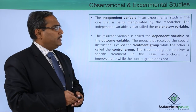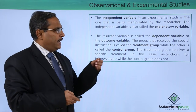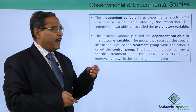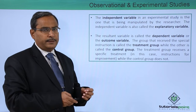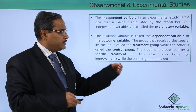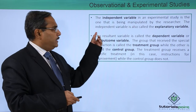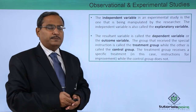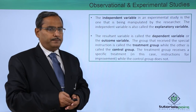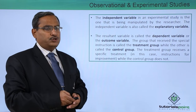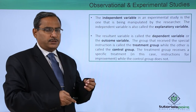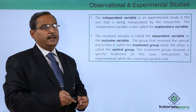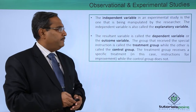The independent variable in an experimental study is the one that is being manipulated by the researcher. The independent variable is also called the explanatory variable — the variable which will be changed by the researcher.